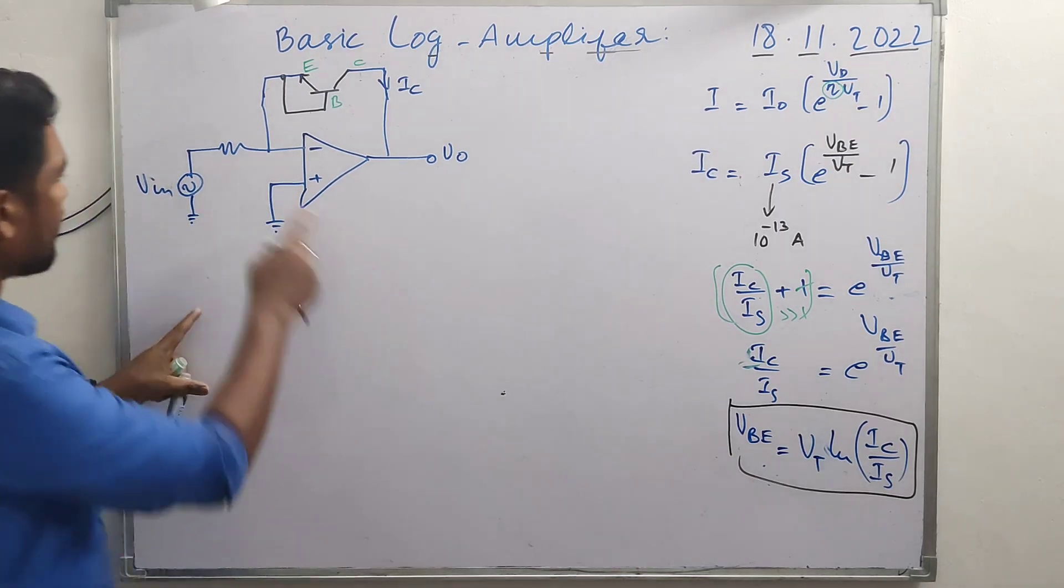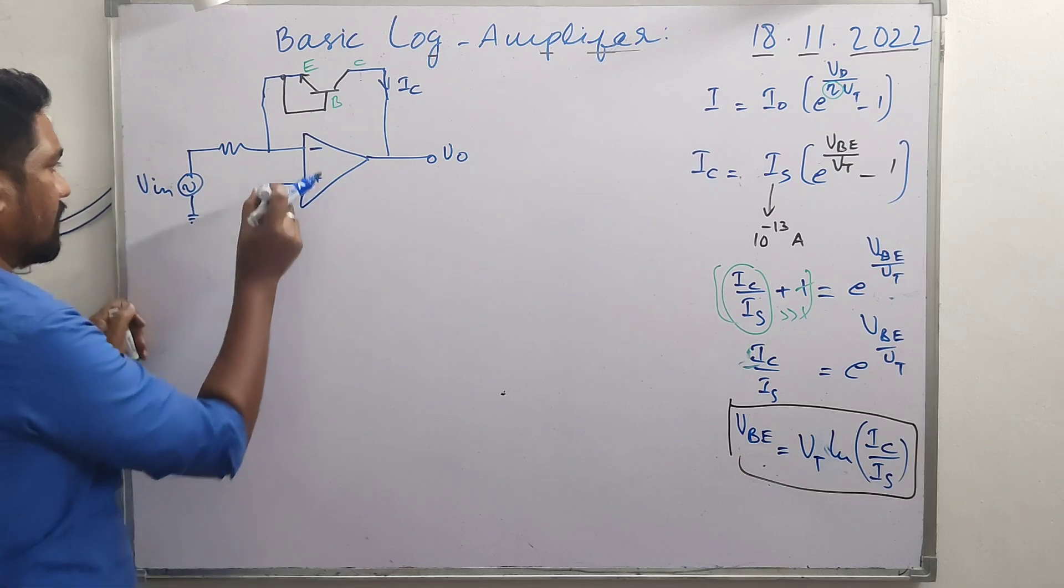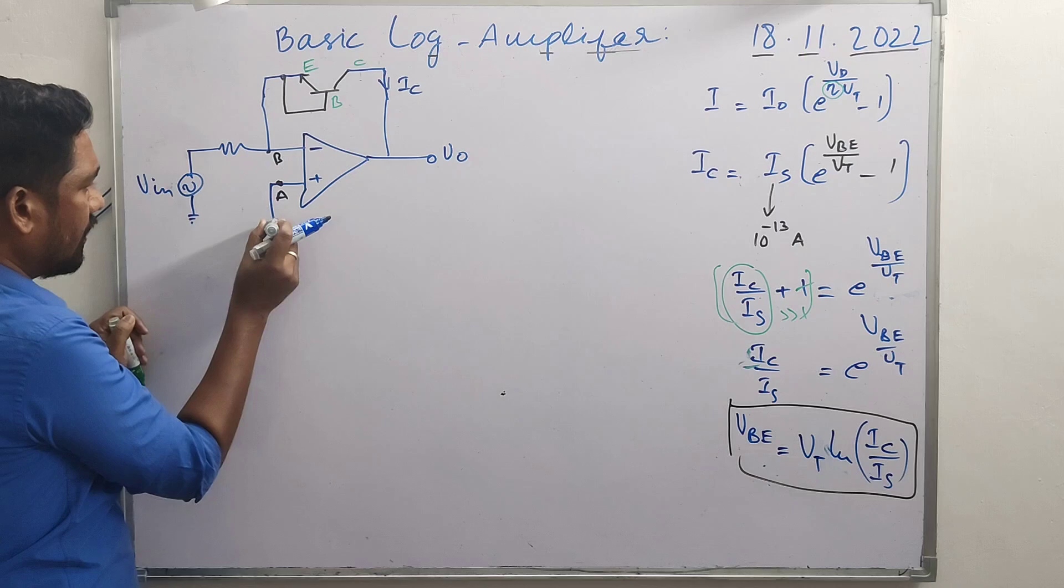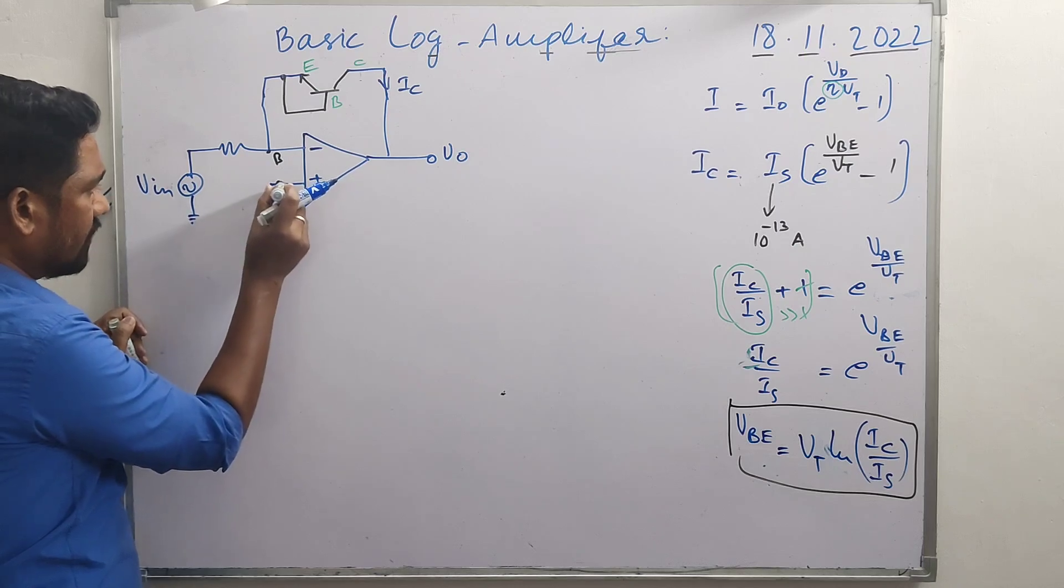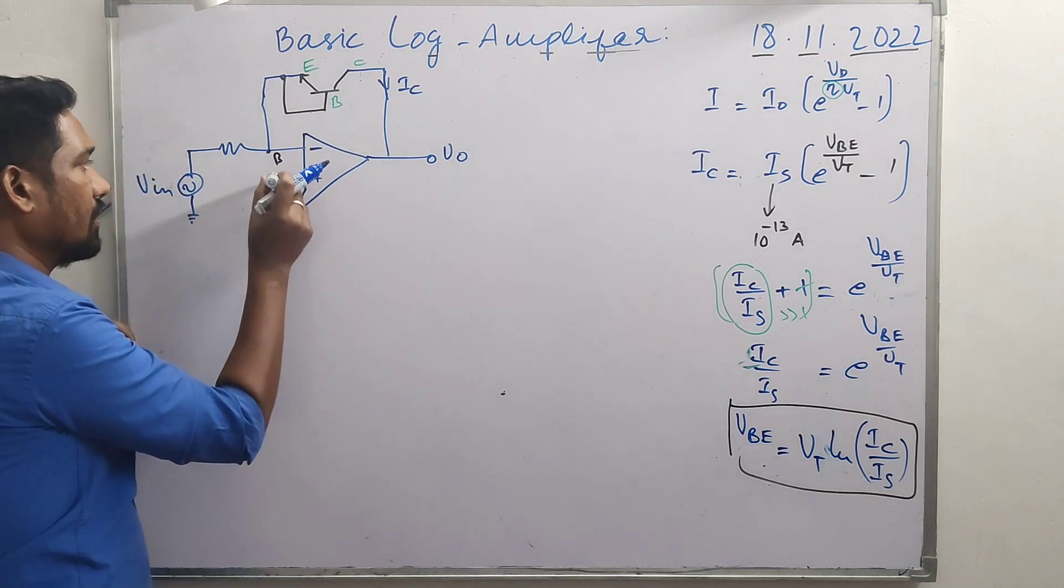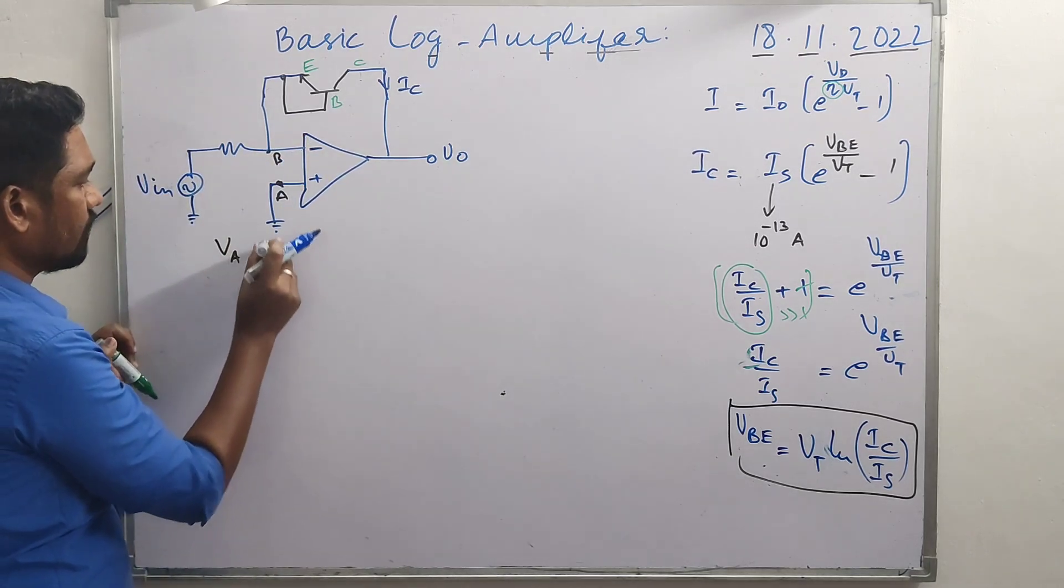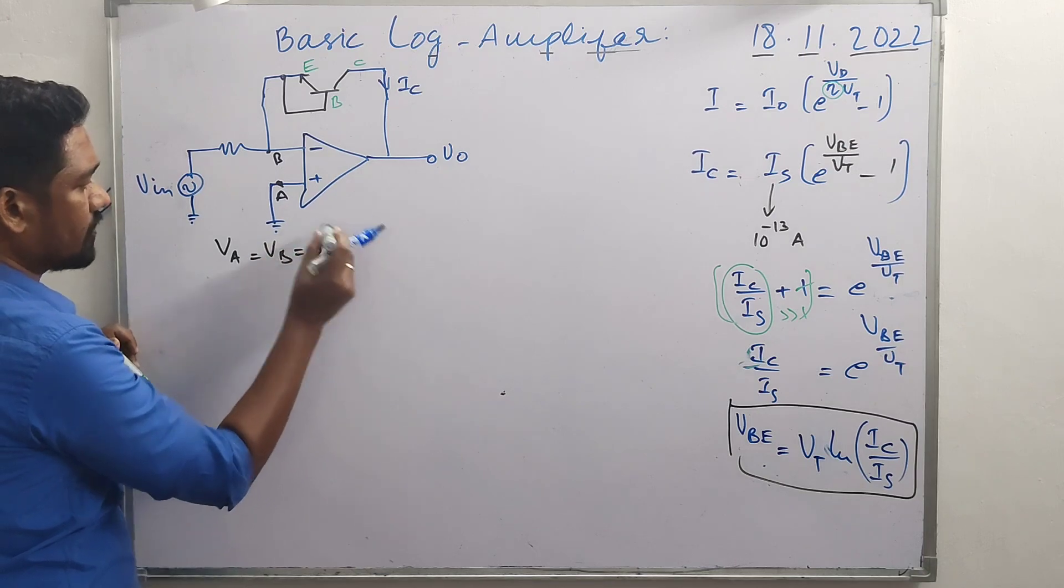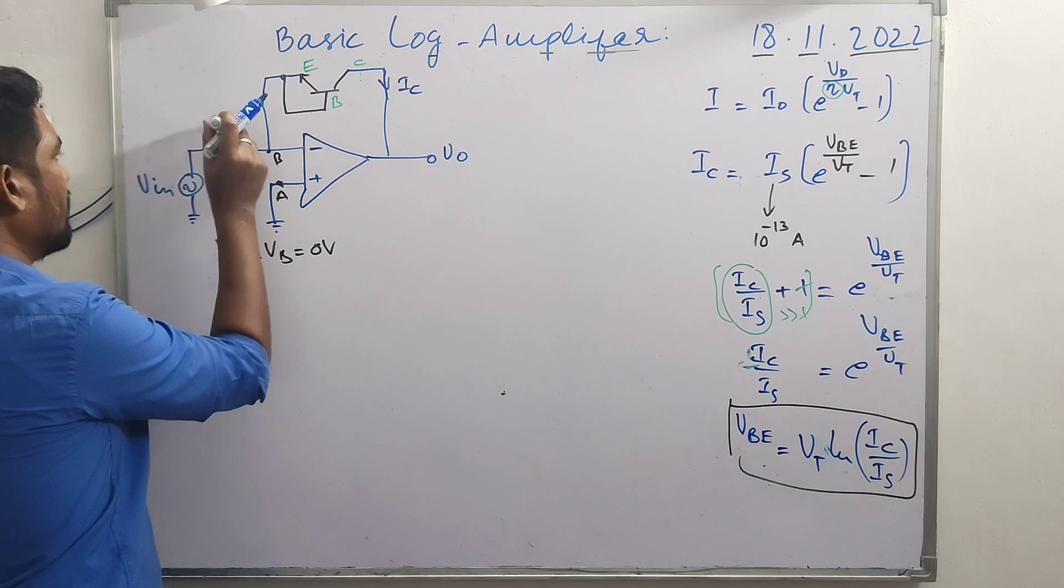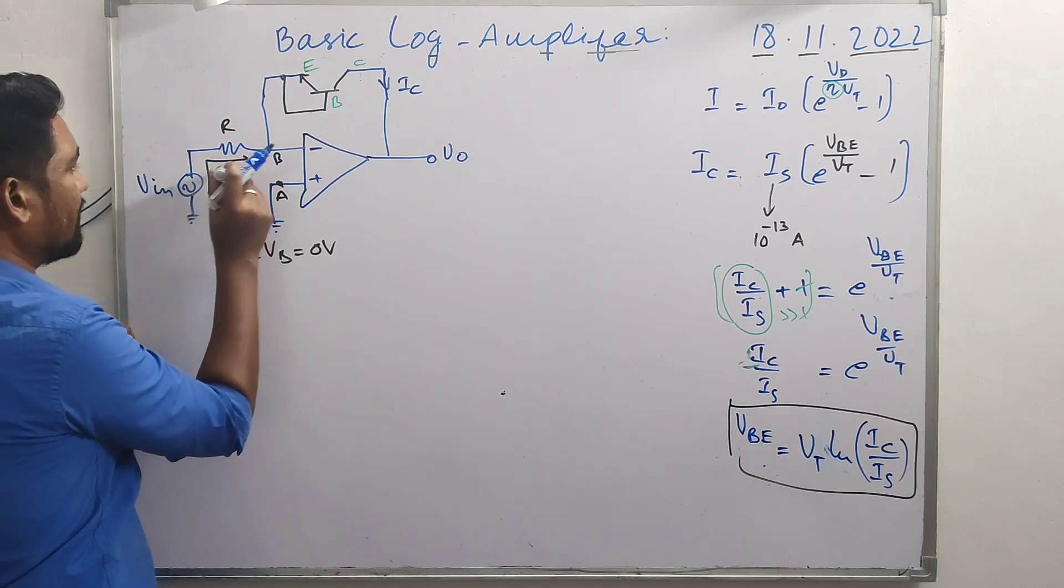Get back to the circuit diagram. Let this be node A, let this be node B. A is at reality ground, and according to virtual ground concept, B is also at ground potential. V_A = V_B = 0 volts, virtual ground concept.